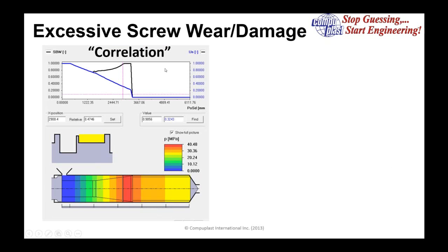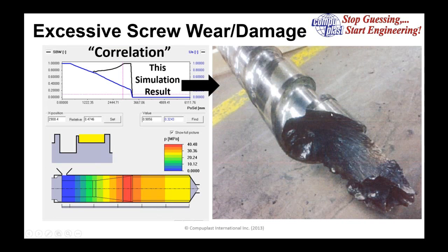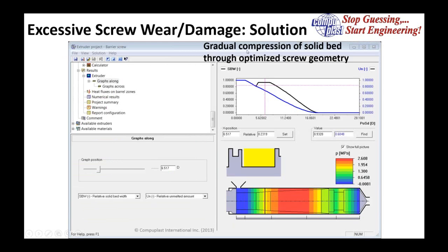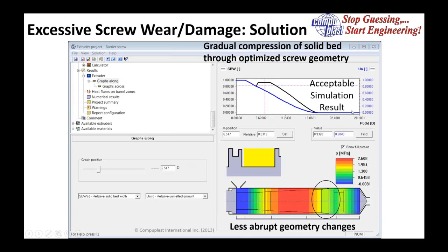The correlation is that once we see this type of simulation result on a particular screw design, we know we're going to see this problem. So for future screws, we analyze the performance and ensure gradual compression of the solid bed through optimized screw geometry with less abrupt geometry changes. This avoids catastrophic failure and maximizes screw life before needing a rebuild. This would be an acceptable simulation result to proceed with manufacturing.